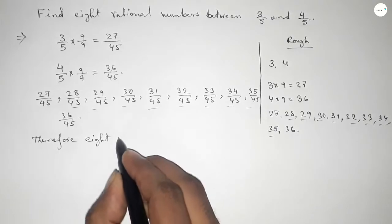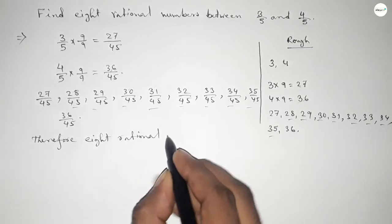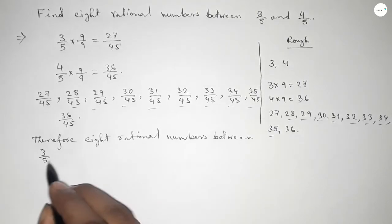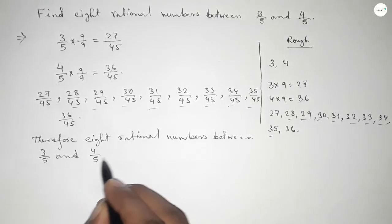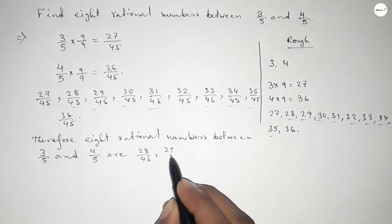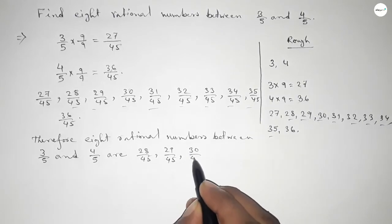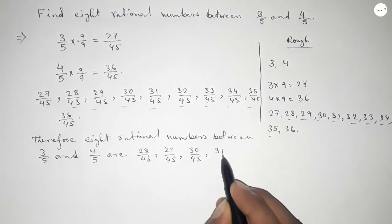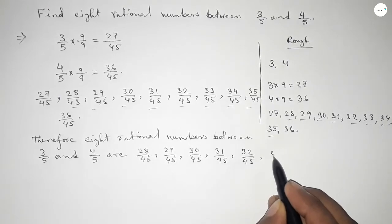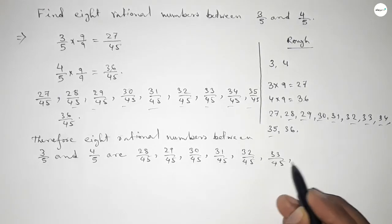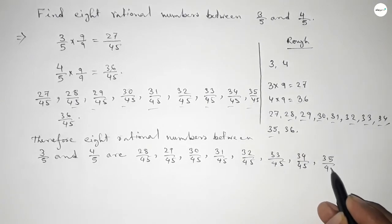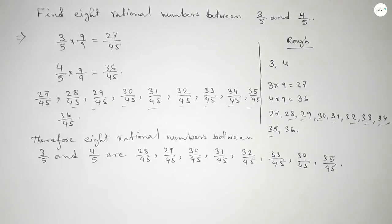Therefore, eight rational numbers between 3 over 5 and 4 over 5 are: 28 over 45, 29 over 45, 30 over 45, 31 over 45, 32 over 45, 33 over 45, 34 over 45, and 35 over 45. That's all.